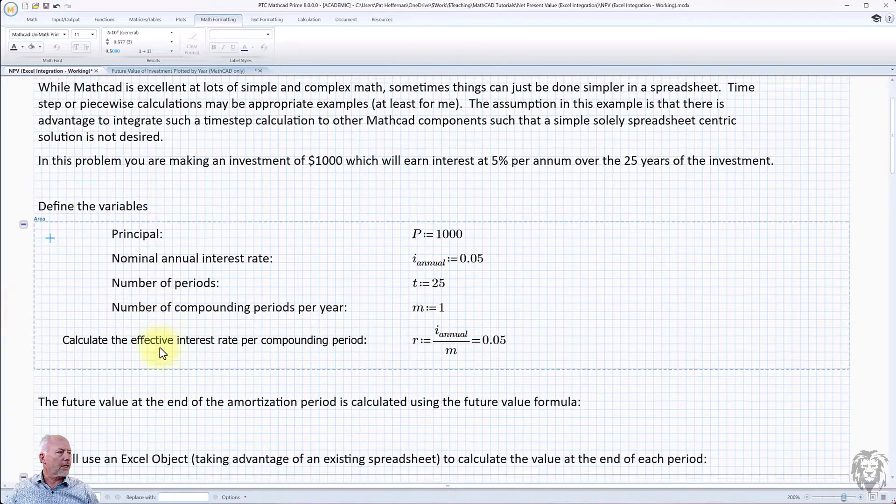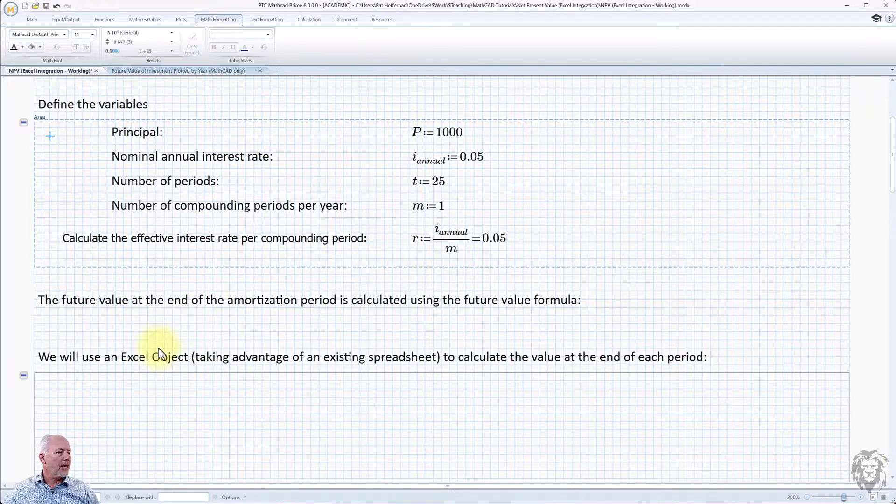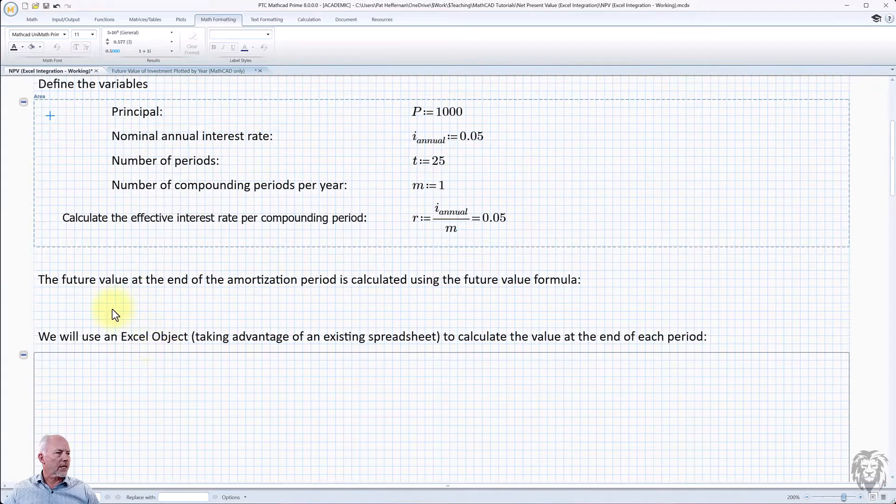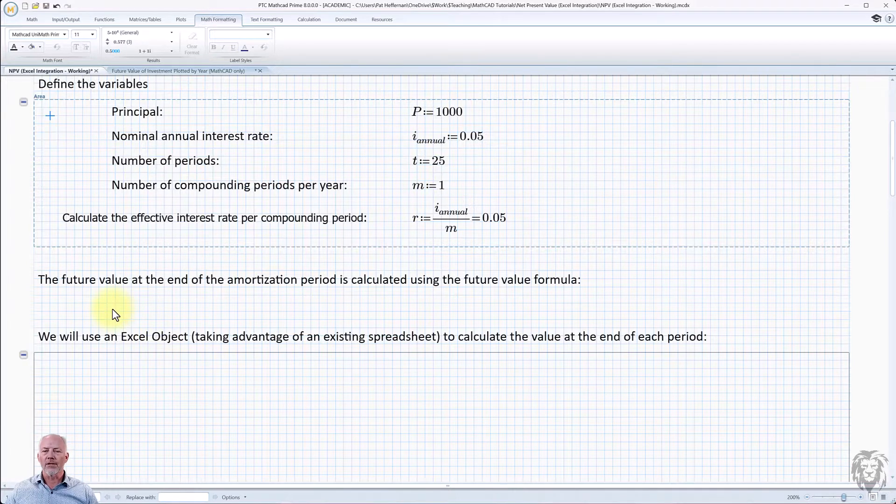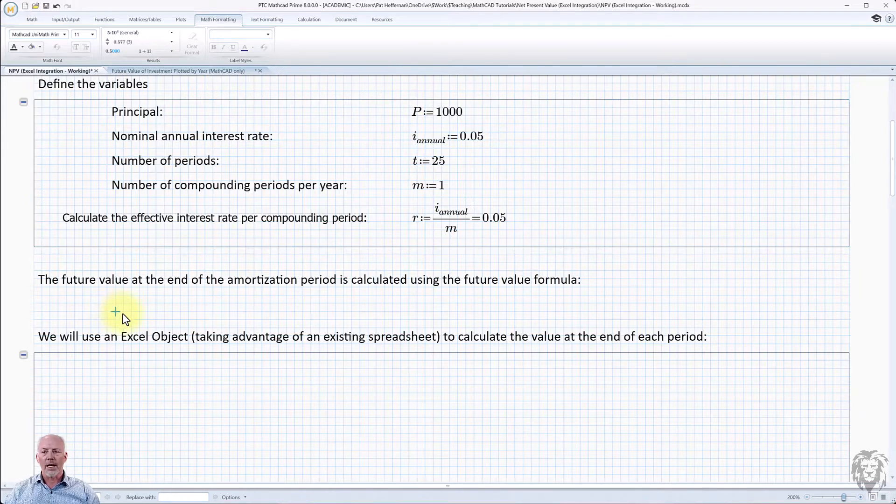So let me just scroll down a little bit. The first thing I want to do is I'm going to calculate what the future value is at the end. So at the end of the amortization period, the end of 25 years, how much money will I have? So that's fairly easy to do.